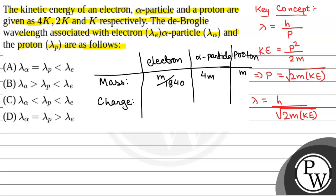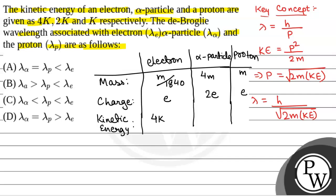Now charge: if charge on a proton is e, then charge on an alpha particle is 2e and charge on an electron is also e. The kinetic energy of the electron is 4k, that of the alpha particle is 2k, and the proton is k.